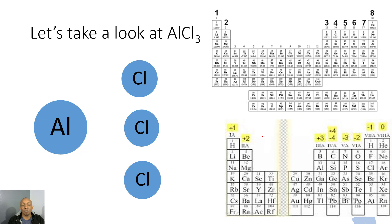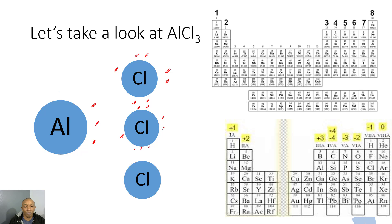Let's take a look at aluminum chloride. Aluminum has three valence electrons on the periodic table, so let's demonstrate that. And then locating chlorine on the periodic table, chlorine has seven valence electrons. Each one of these chlorines is going to have seven valence electrons.